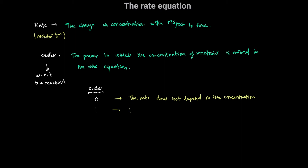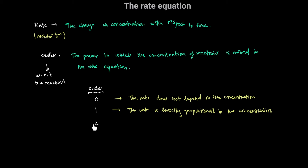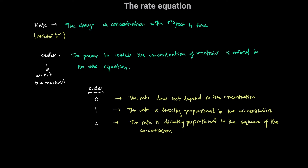When something is order 1, the rate is directly proportional to the concentration of that reactant. When a reaction is order 2 with respect to a particular reactant, the rate is directly proportional to the square of the concentration of that reactant.